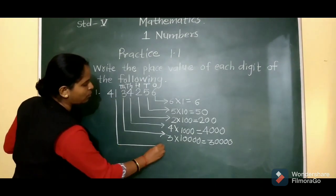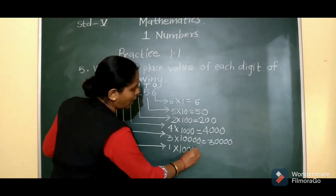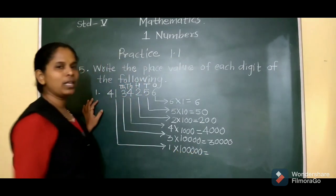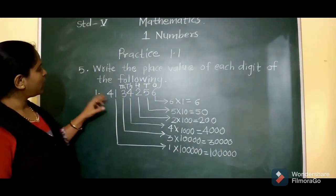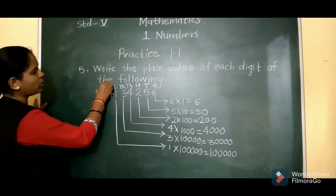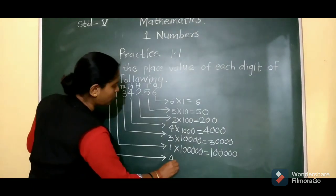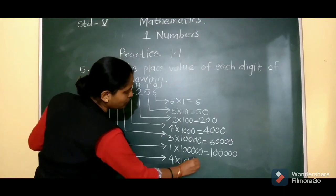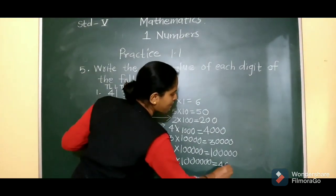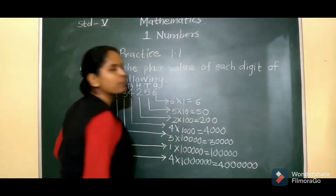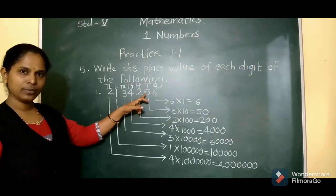Now, 1 is at the lakhs place, so we multiply 1 by 1 lakh — 1 into 1 lakh is 1 lakh. The place value of 1 is 1 lakh. Next digit is 4, which is at 10 lakhs place, so 4 into 10 lakhs is 40 lakhs. Understood how to find the place value of each digit in the number.